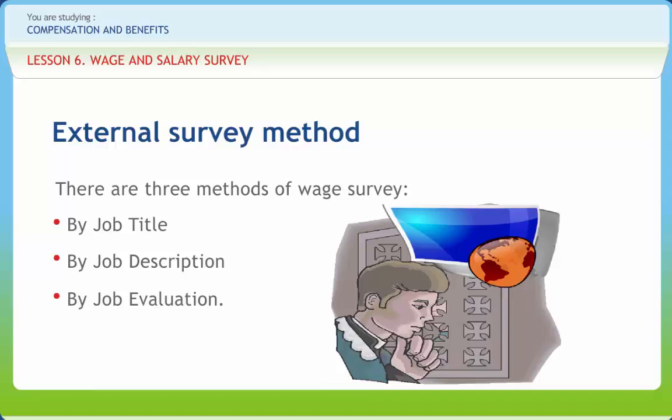Job description method is the most common method used in the pay survey. The comparison is made on the basis of the job description. The wage data in other industries are collected for jobs which have the same job descriptions in the company doing the pay survey. Job evaluation method is an improvement over the job description method. The descriptions are collected for the jobs selected for wage survey in other industries and evaluated under the same plan used by the company undertaking the wage survey. Unless the wage structure is competitive, it will be difficult to get and retain an efficient workforce.